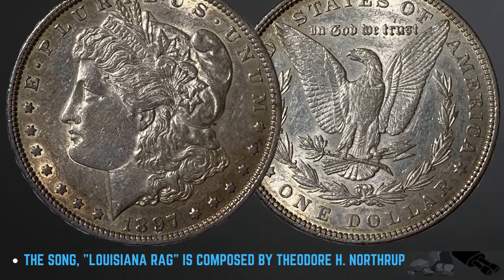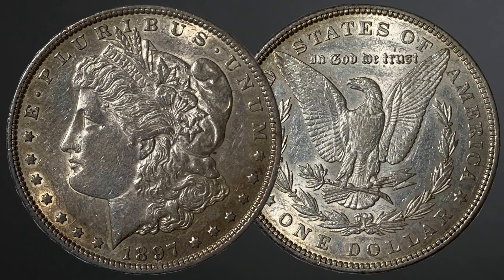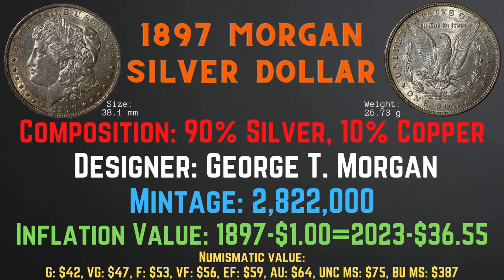Now let's take a look at the 1897 Morgan silver dollar. It has a size of 38.1 millimeters, a weight of 26.73 grams, and a composition of 90% silver and 10% copper. Its designer was George T. Morgan. Its mintage is 2,822,000. Its inflationary value for the year 1897 is $36.55. Its numismatic value ranges from $42 in good condition up to $387 in brilliant uncirculated mint state condition.